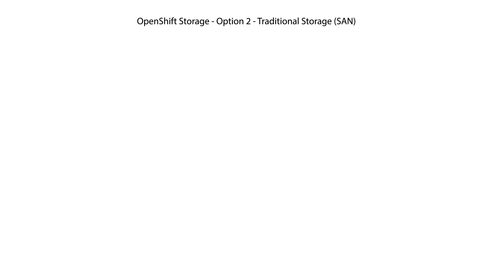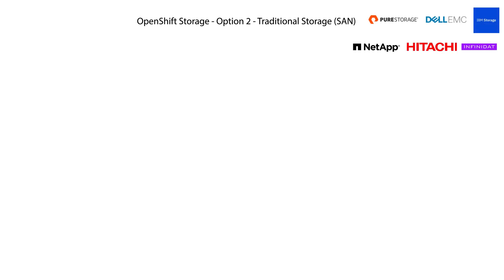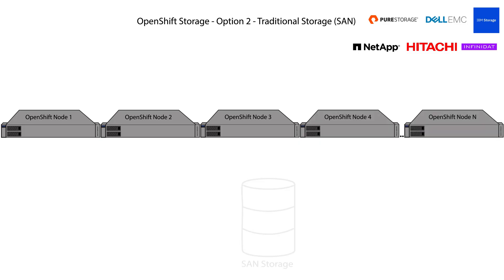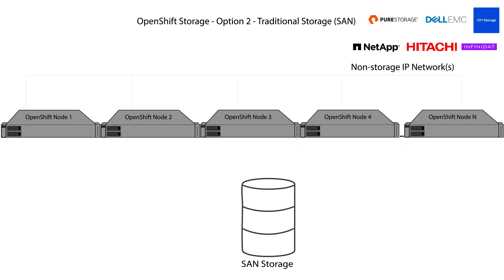Let's move to the second category of storage: traditional SAN storage. There are many commercial options available. We start with our OpenShift nodes and two local drives just for the OS, then we add a big storage array that usually runs on proprietary hardware and software. We cannot forget about networking: a non-storage IP network for all non-storage traffic — east-west, north-south — and with the big storage array we also need a dedicated storage network. This doesn't have to be an IP network; it's very common to use fiber channel connectivity, an extremely fast storage network that avoids some of the overhead of managing the TCP/IP stack. You can also technically qualify iSCSI or NFS protocols in this bucket, even though they do take advantage of IP networks.